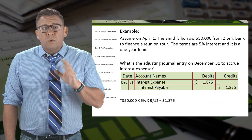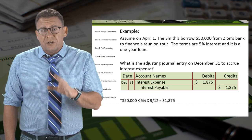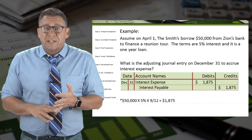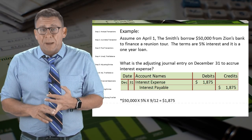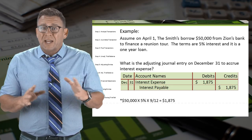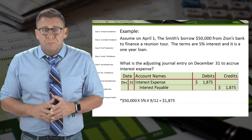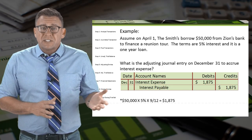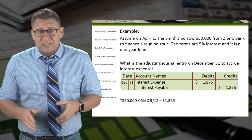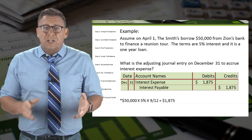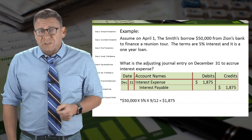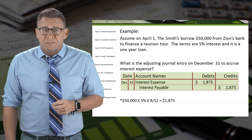When we record an adjusting entry to accrue an expense, we always debit an expense account and credit a liability. In this example, we debit interest expense and credit interest payable for $1,875.